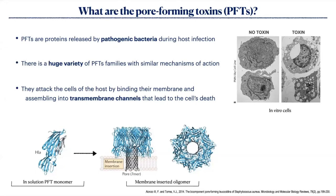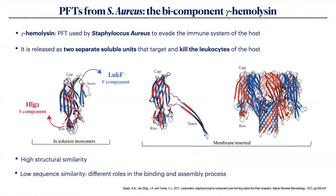They are released as soluble monomers by bacteria, attack and bind the membrane of the host cells, then assemble into an oligomer and form a transmembrane channel — like the one you can see in the picture — that eventually leads to the death of the cell. In particular, I am studying gamma hemolysin, a pore-forming toxin used by Staphylococcus aureus to evade the host immune system. Gamma hemolysin is released as two separate soluble components — LukF and HlgB — that target and kill leukocytes, the immune cells of the host, forming the transmembrane channel depicted here.